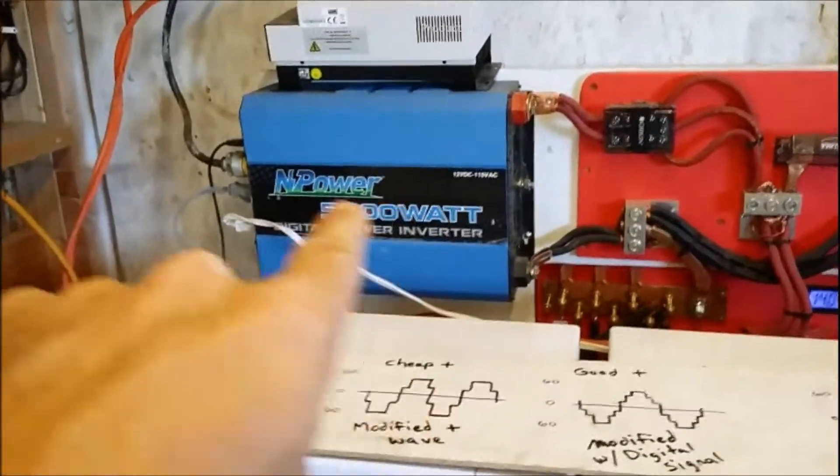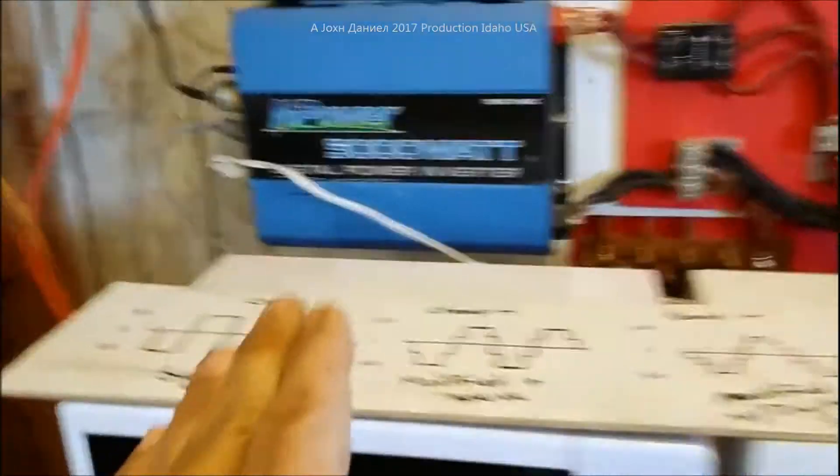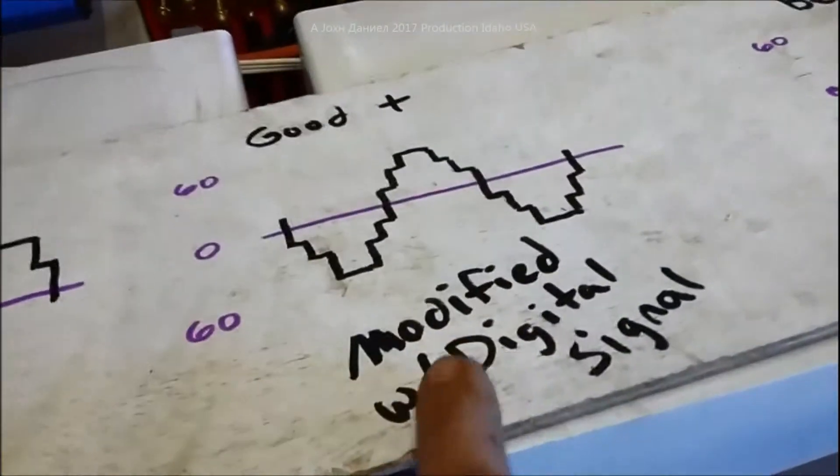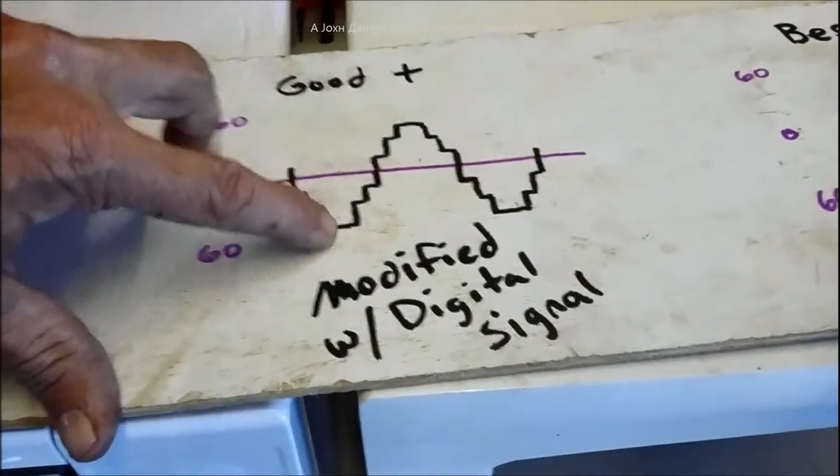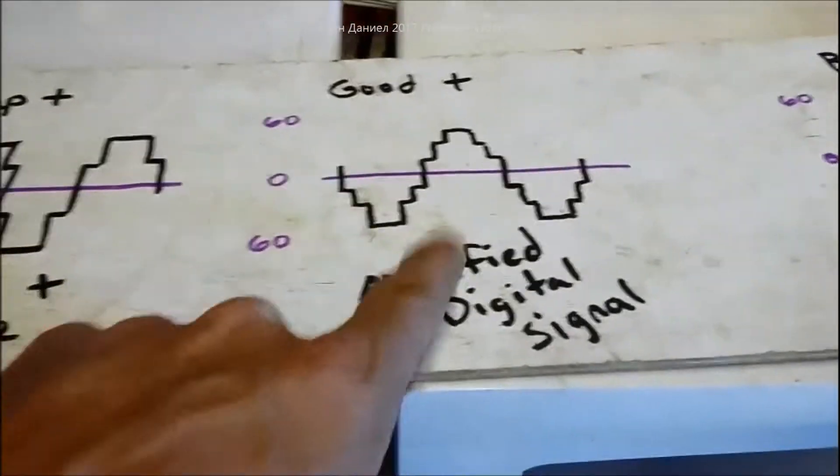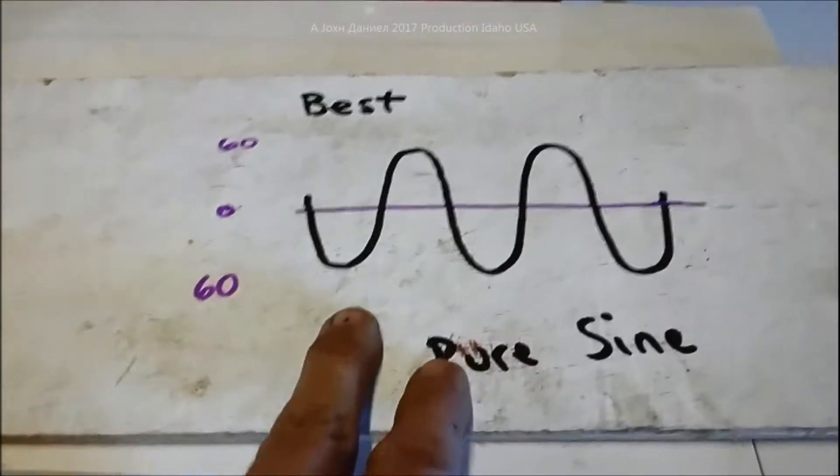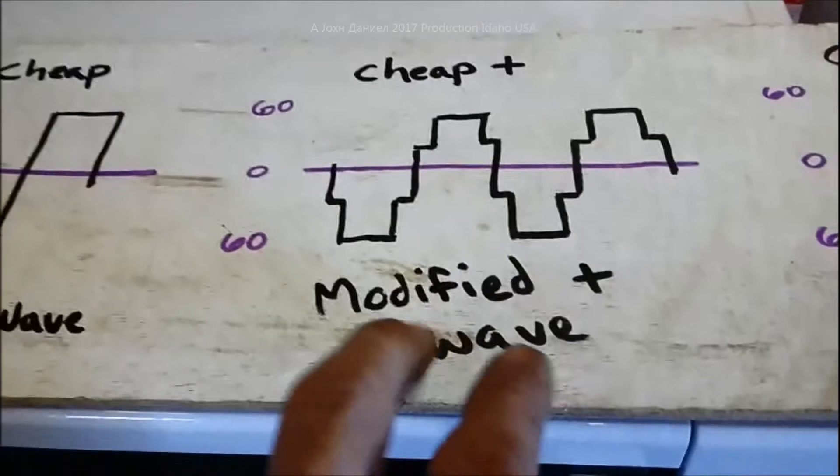It has this one, modified digital signal. So you'll see that it has numerous steps in its square wave. It's very close to making it a pure sine wave, it's not very notchy as they say.